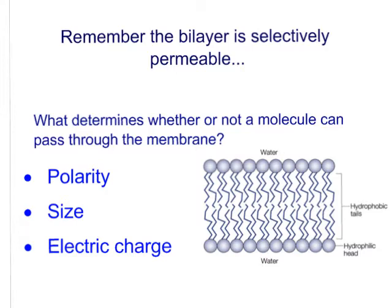Now we're going to ask the question: what determines whether or not a molecule can pass through the membrane? There are three main factors that influence that — polarity of the molecule, the size of the molecule, and the molecule's electric charge.